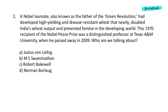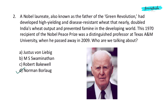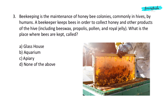Question 2. A Nobel laureate, also known as the father of the Green Revolution, had developed high-yielding and disease-resistant wheat that nearly doubled India's wheat output and prevented famine in the developing world. This 1970 recipient of the Nobel Peace Prize was a distinguished professor at Texas A&M University when he passed away in 2009. Who are we talking about? Option D: Norman Borlaug.